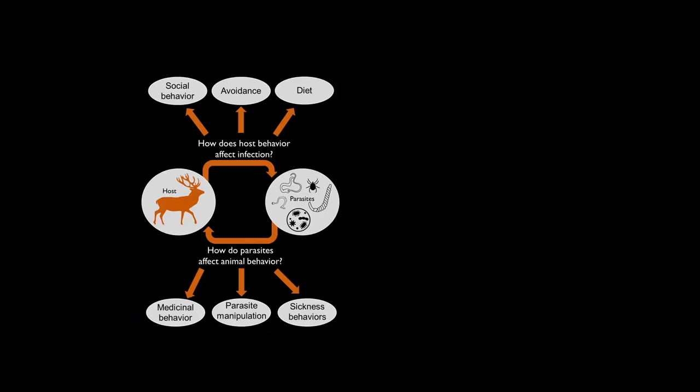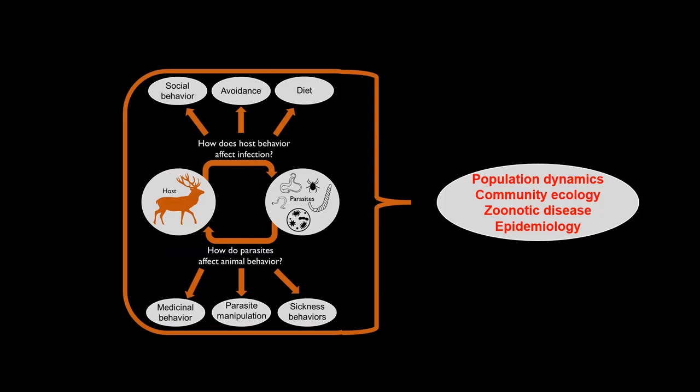A lot of people want to know: if you take all these interactions, how do they influence larger-scale dynamics? Can a population go extinct because of parasites? How does understanding host-parasite behavior influence community ecology, zoonotic diseases, or epidemiology? Very few researchers actually address all of these things because it requires answering each component first.